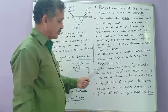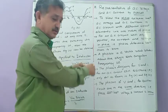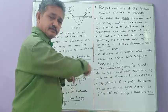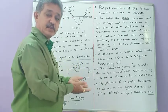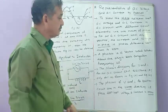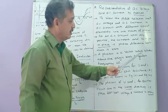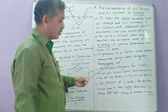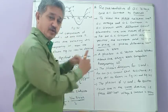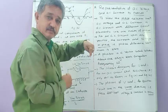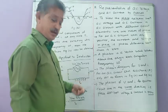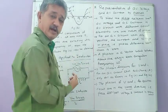The phasor rotates above the origin with an angular frequency omega in the XY plane. If the angular frequency is 2π radians per second, the vector completes one rotation per second; if it is 4π radians per second, it completes two rotations per second. So depending on angular frequency, the vector of voltage or current rotates above the origin in the XY plane.